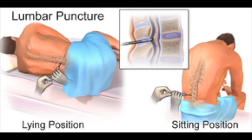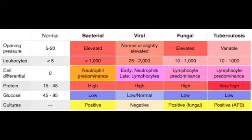CSF findings by type: Normal — opening pressure 5–20, clear, normal protein, glucose 50–80, WBC 0–5. Bacterial — increased pressure (200–500), turbid, increased protein, decreased glucose under 45, WBC pleocytosis over 80% neutrophils (100–100,000), gram stain positive 60–90%. Viral/aseptic — normal or mildly increased pressure, clear, normal or mildly increased protein, normal glucose (important), small increase in WBCs predominantly lymphocytes. Fungal — same as viral but with decreased glucose and lymphocytic WBCs.